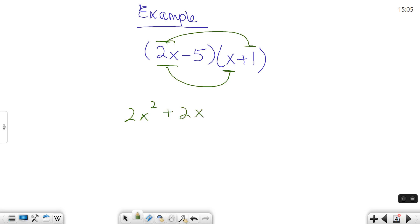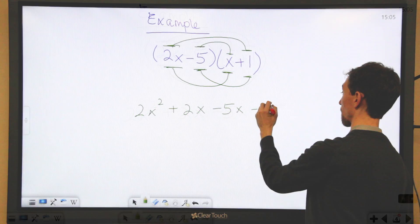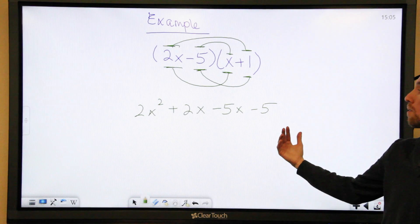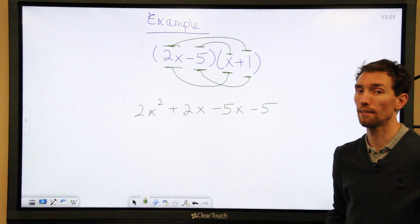The inner terms are going to be negative 5 and x. Negative 5 times x is negative 5x. And then our last terms are going to be negative 5 and positive 1. Negative 5 times positive 1 is negative 5. That's why this sign is important because it changes whether you're adding or subtracting your terms.